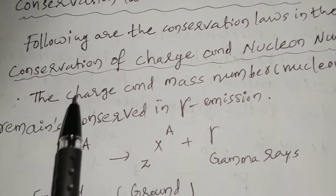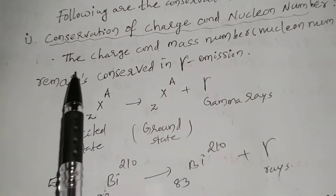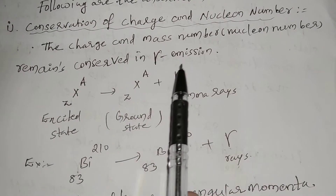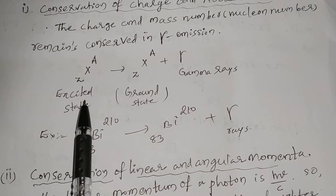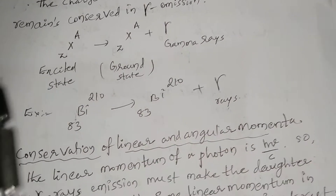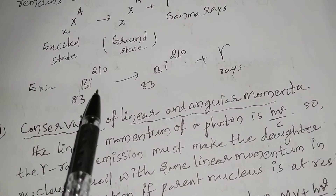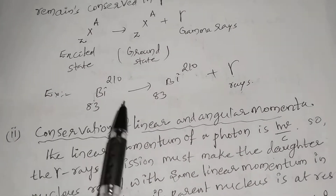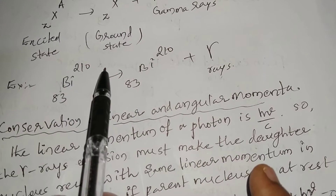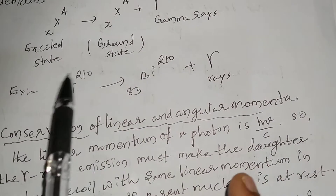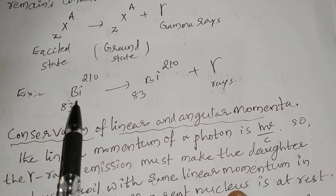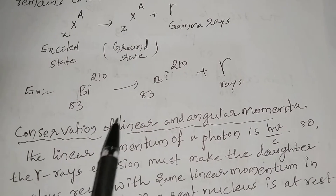The conservation laws in gamma emission are as follows: conservation of charge and nuclear number. The charge and mass number, that is the nuclear number, remains conserved in gamma emission. The excited state nucleus decays into the ground state and emits gamma rays. For example, Bismuth-83-210 returns to the ground state and emits gamma rays. The mass number 210 of the parent nuclei equals the mass number of the daughter nuclei, so nuclear number is conserved. Similarly, the charge of the parent nuclei equals the charge of the daughter nucleus, so charge is conserved.